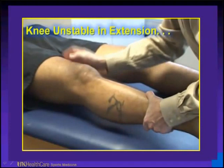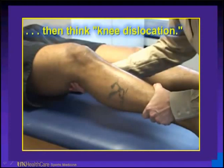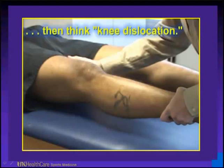Instability in knee extension — think about a knee dislocation. This can be either varus or valgus at zero degrees. Sometimes at 30 degrees flexion on varus stress testing there will be a little opening, but not on valgus stress testing. Compare it to the good side.